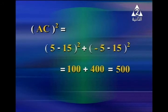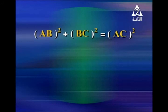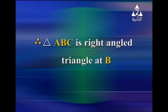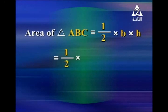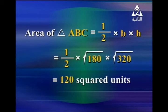We notice that AB squared plus BC squared equals 180 plus 320 equals 500, which equals AC squared. So Pythagoras' theorem is satisfied, and triangle ABC is right-angled at B. AB is the base and BC is the height, so the area of triangle ABC equals half times base times height, which is half times square root 180 times square root 320, giving 120 square units.